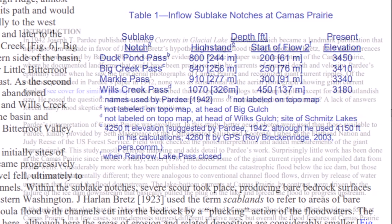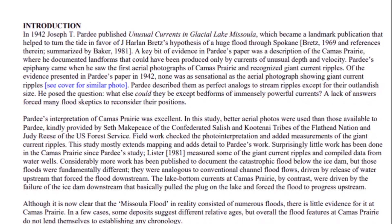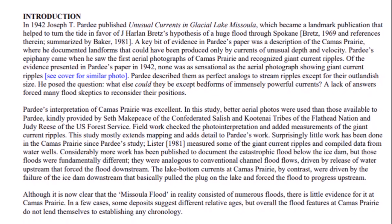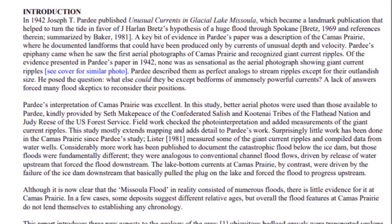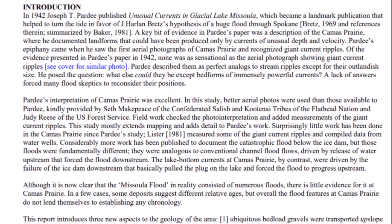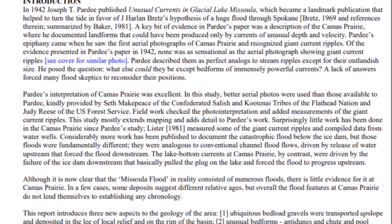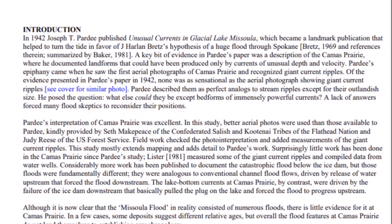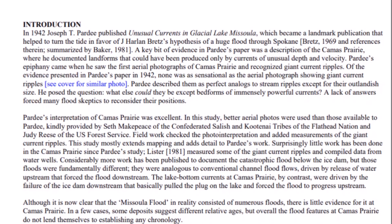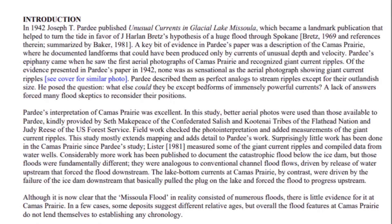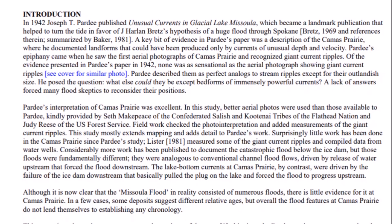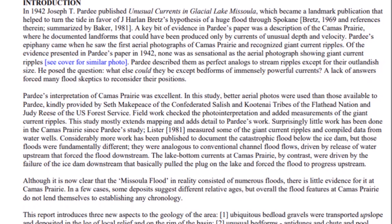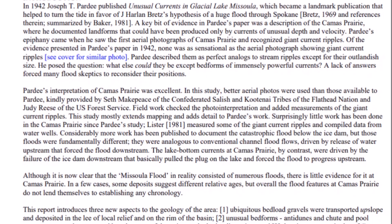I don't think we have the true story — I think we're starting to figure it out now. Here is the introduction to this PDF. It says in 1942, Joseph T. Parry published 'Unusual Currents in Glacial Lake Missoula,' which became a landmark publication that helped turn the tide in favor of J. Harlem Bretz's hypothesis of a huge flood through Spokane. A key bit of evidence in Parry's paper was a description of Camas Prairie, where he documented landforms that could have been produced only by currents of unusual depth and velocity. Although it is now thought that the Missoula flood in reality consisted of numerous floods, there is little evidence for that at Camas Prairie.